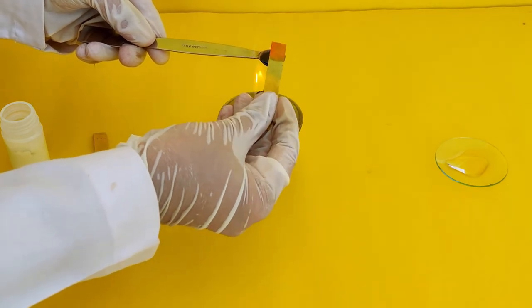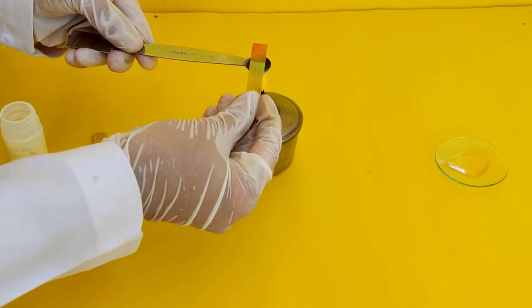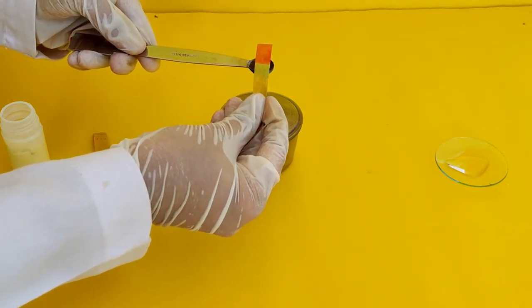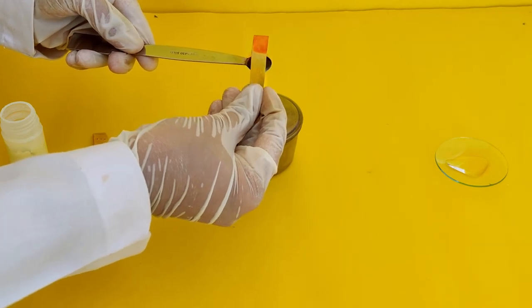You will see the pH paper turns orange in color. This shows that the sulfur dioxide gas released through the burning or oxidation of sulfur is acidic in nature.